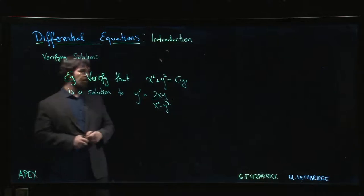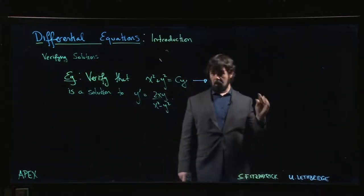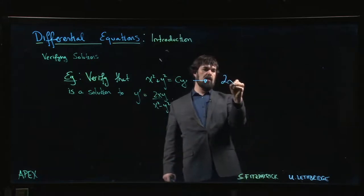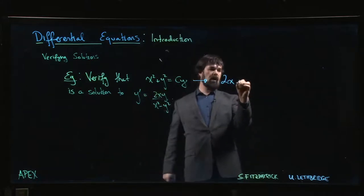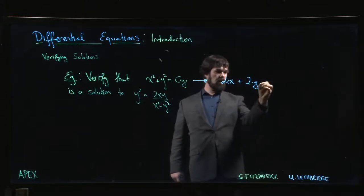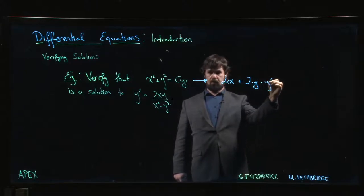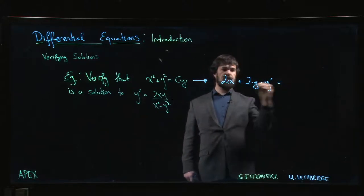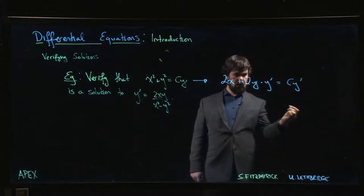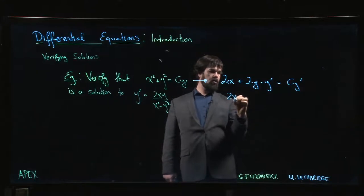Take the derivative of both sides with respect to x. Derivative of x squared is 2x. Derivative of y squared is 2y, but we're taking the derivative with respect to x, so we get a y prime. On the other side, derivative of c times y is c times y prime.